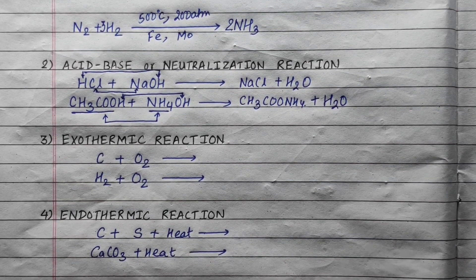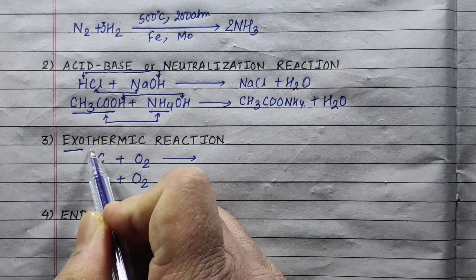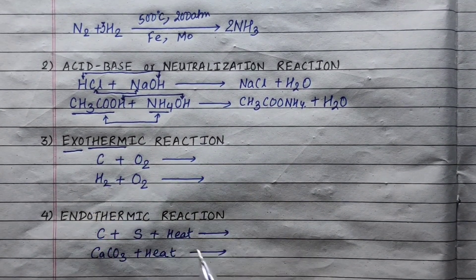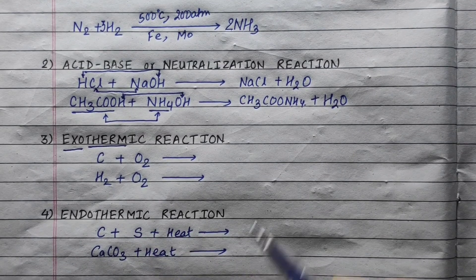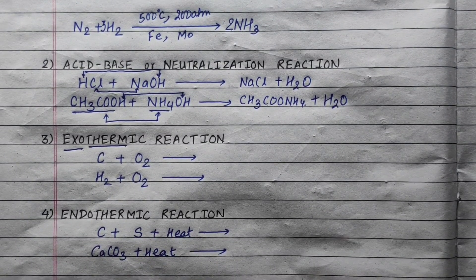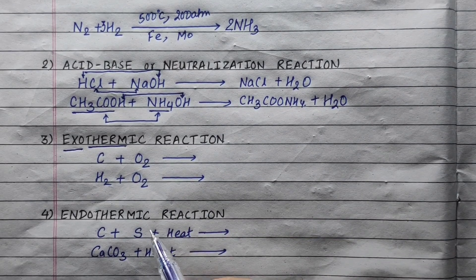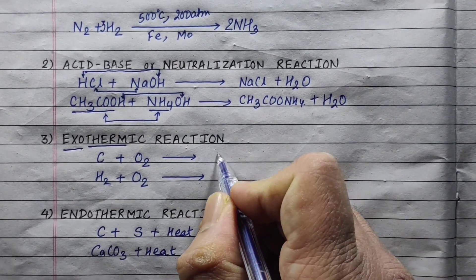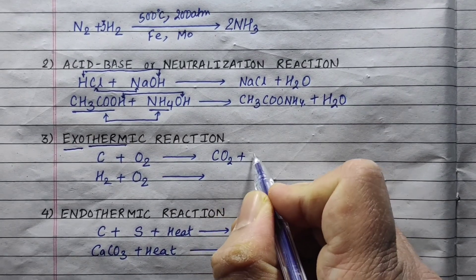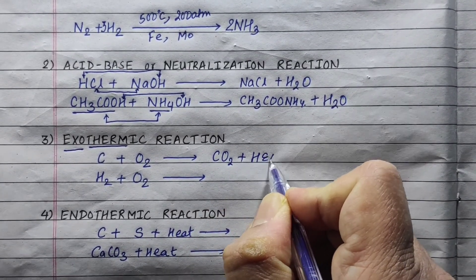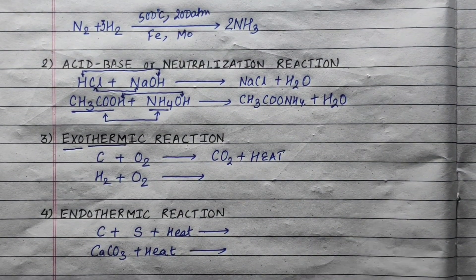Now let's go to the exothermic reaction. Exothermic means external thermo — heat is released. In this reaction, heat is released along with the products. Generally, the burning reaction is like this: carbon plus oxygen gives carbon dioxide plus heat released along with the product side. CO₂ + heat.